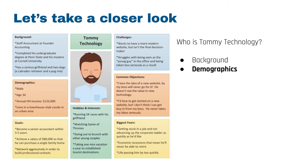Let's look at his demographics. He's male, age 34, with an annual household income of $125,000. He lives in a townhouse-style condo in an urban area. His goals include becoming a senior accountant within three to five years, achieving a salary of $80,000 to purchase a single-family home, and networking aggressively to build professional contacts.